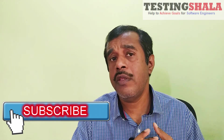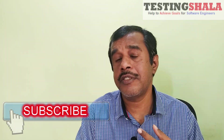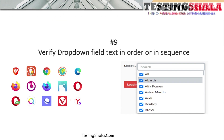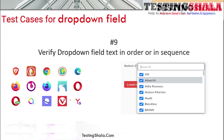You should also validate spelling, font size, and colors to ensure they align with the UI guidelines defined for your application. Additionally, all data present in the dropdown should be ordered in the correct way — ascending or descending — as specified in the requirements. If the requirement says ascending, it should display ascending; if descending, then descending.